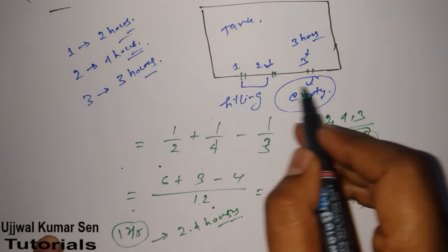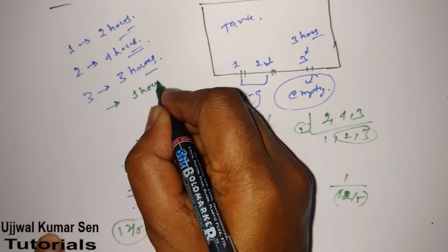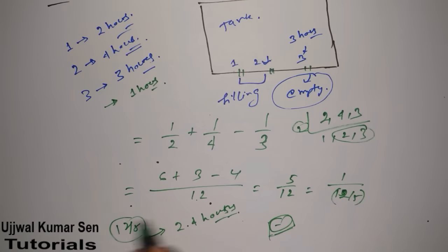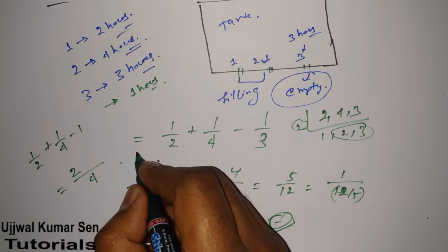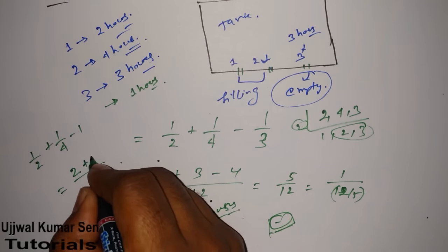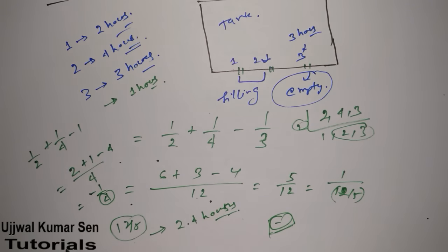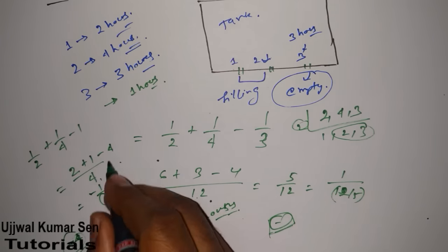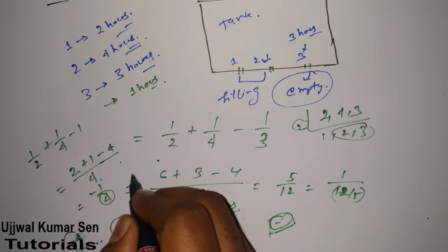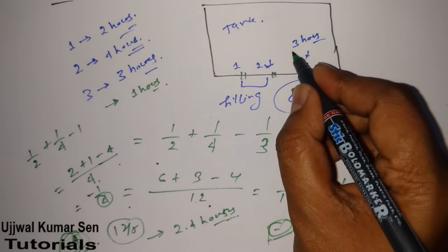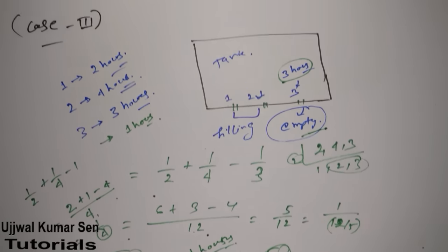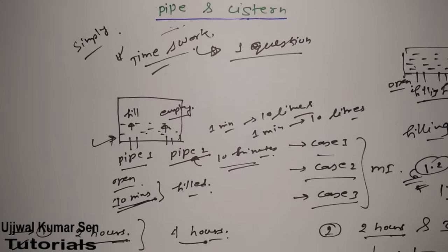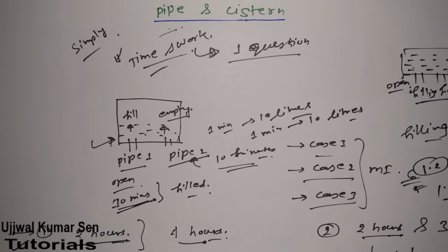For example, if the empty tab takes 1 hour alone, we write: 1/2 plus 1/4 minus 1, which gives 2 plus 1 minus 4 over 4, equals minus 1/4. The negative sign means the tank empties, and the tank will be fully empty within 4 hours. This is how you solve problems related to pipes and cisterns. I hope you understand — it will help in upcoming examinations. Thanks for watching, see you soon!